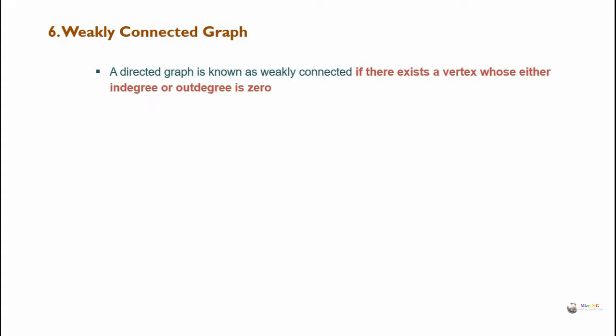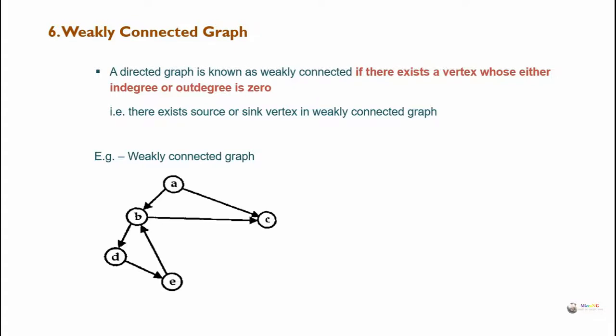Weakly connected graph: a directed graph is known as weakly connected if there exists a vertex whose either in-degree or out-degree is 0, meaning there exists a source or sink vertex. In the example, the in-degree of vertex A is 0, making it a source, and the out-degree of vertex C is 0, making it a sink. So this is an example for a weakly connected graph.